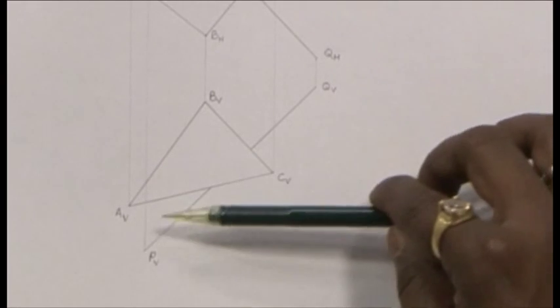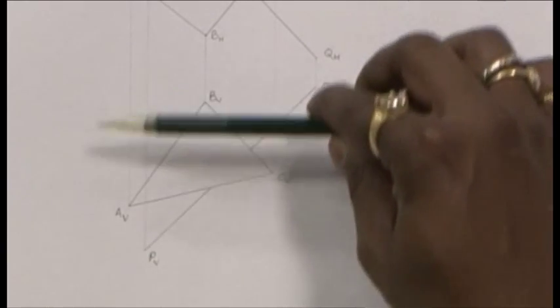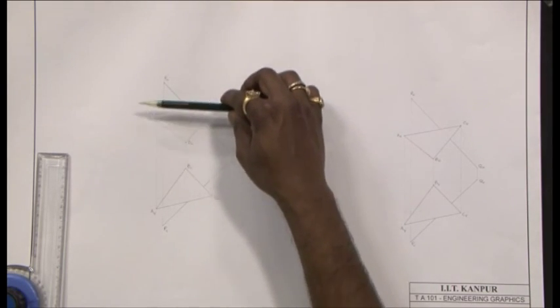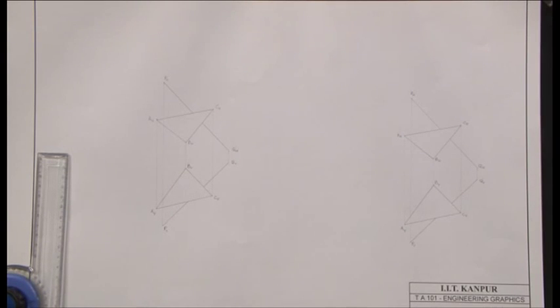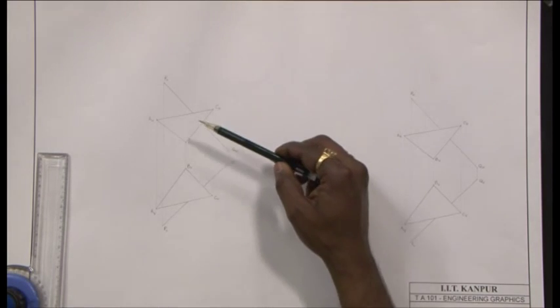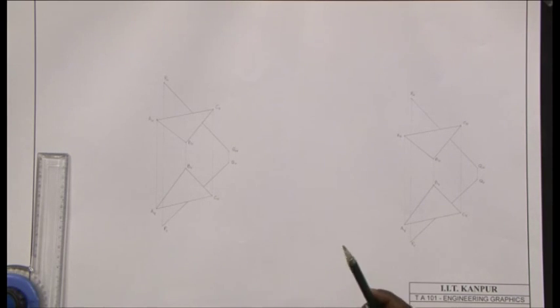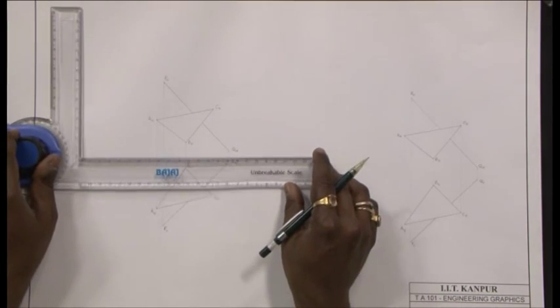This is the projection of the plane on the frontal view or the frontal plane. This is the projection of the plane in the top view or the horizontal plane. Likewise for the lines, same over here. The question now is to determine first the intersection between the line and the plane if there exists one. We will try to first figure the edge view of this plane. For that, let us start with the hinge line in between these two views.